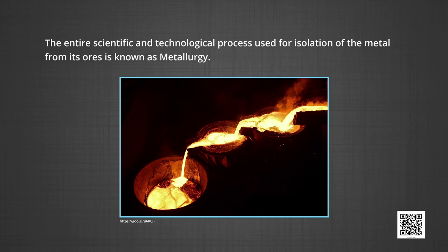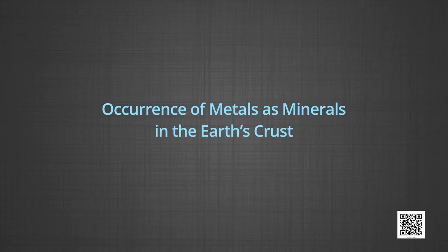The entire scientific and technological process used for isolation of the metal from its ore is known as metallurgy. In the present episode, we shall focus on the first and important step of metallurgy, that is concentration of ore. We would describe the various steps involved in the effective concentration of ore. Selection of ore forms a very crucial step in the metallurgy of a metal.